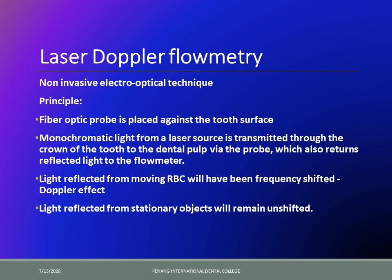Laser Doppler flowmetry uses an electro-optical technique. You place a fiber optic probe against the tooth surface, a light is shone from the laser and transmitted through the crown towards the dental pulp. This probe also returns the light which is reflected after hitting the dental pulp, back to the flow meter — the part of the instrument which evaluates blood flow.